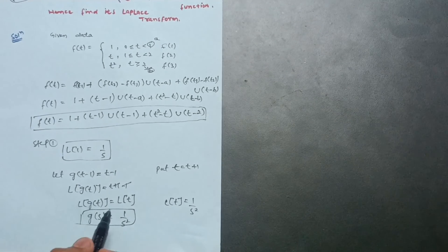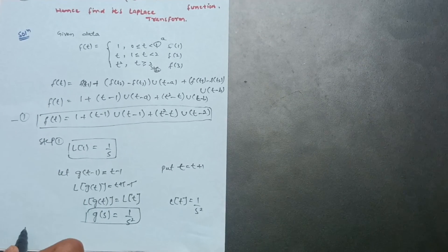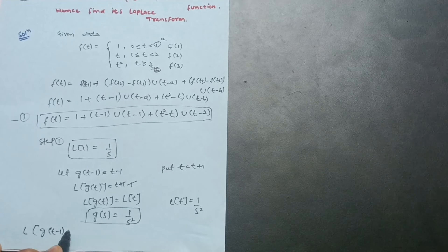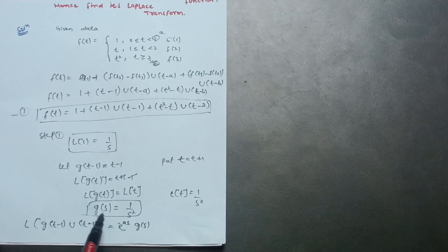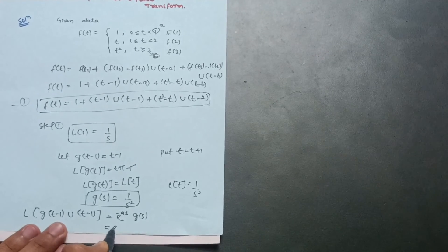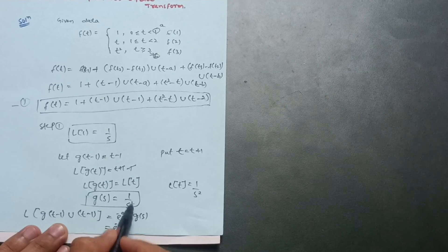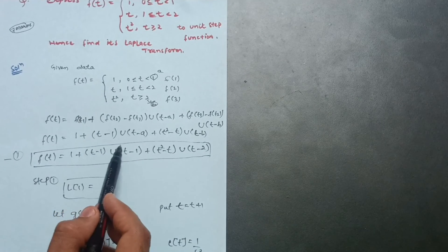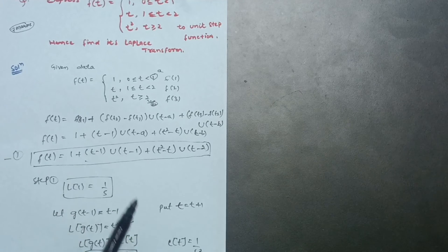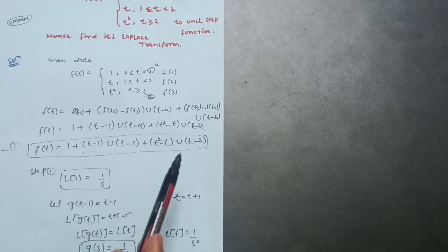For the third term, let h(t−2) = t²−t. To find h(t), substitute t with t+2: h(t) = (t+2)²−(t+2) = t²+4t+4−t−2 = t²+3t+2. Applying Laplace: H(s) = L{t²} + 3·L{t} + 2·L{1} = 2/s³ + 3/s² + 2/s.